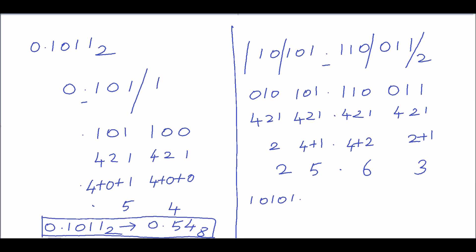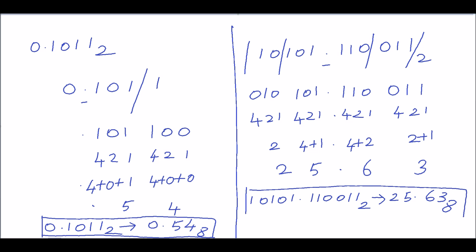So the binary number 10101.110011₂ can be written as 25.63₈. The binary to octal conversion is very simple: group the given binary number into groups of three bits and convert each group into its equivalent octal digit. Hope you understand this concept. Thank you.